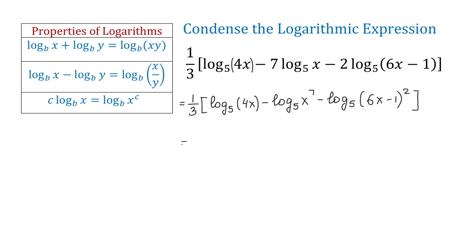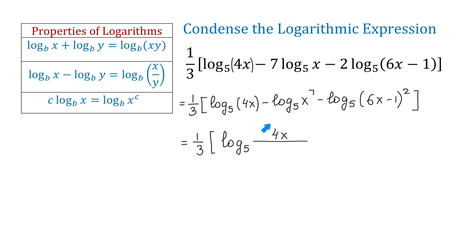In the next step, we will condense all three logarithms into one single logarithm. So we will have 1 over 3 times bracket, and we write the logarithm just once. Because some logarithms have a negative sign in front, we will need a fraction. The first logarithm has a positive sign, so 4x will be in the numerator. The next logarithm has a minus sign, so x to the 7th power will be in the denominator. The last logarithm also has a minus sign, so 6x minus 1 to the 2nd power will also be in the denominator, multiplied by x to the 7th power.